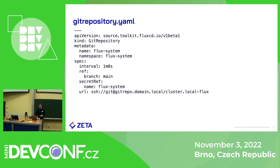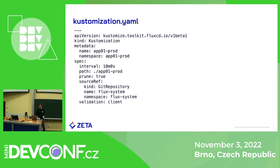This is how a typical GitRepository definition looks — any GitRepository definition will look like this. It's very short and to the point. This definition tells Flux's source controller to fetch branch main from a specific URL every minute. Flux doesn't care what's in the repository at this point — it will happily clone kernel sources, for example. It simply clones the repository or fetches updates from the remote.